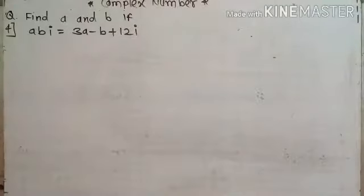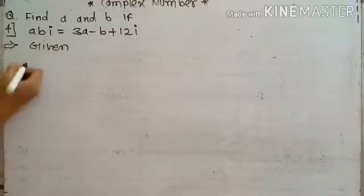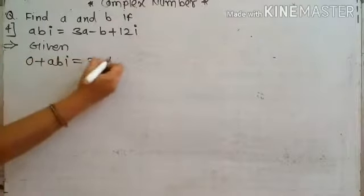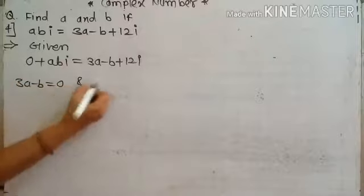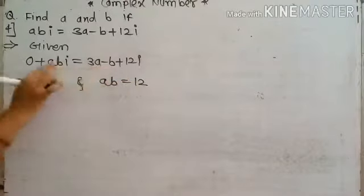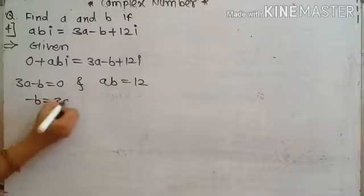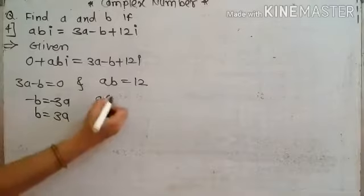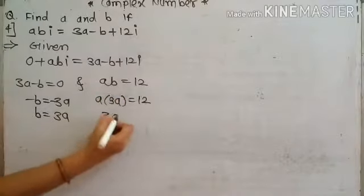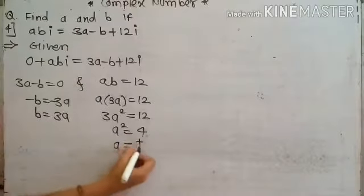The next example: abi is equal to 3a minus b plus 12i. Find the value of a and b. Since there is no real part on the left, we write 0 plus abi is equal to 3a minus b plus 12i. Comparing: real part gives 3a minus b is equal to 0, and imaginary part gives ab is equal to 12. From the first equation, b is equal to 3a. Substituting into the second equation: a times 3a is equal to 12, so 3a squared is equal to 12, therefore a squared is equal to 4.